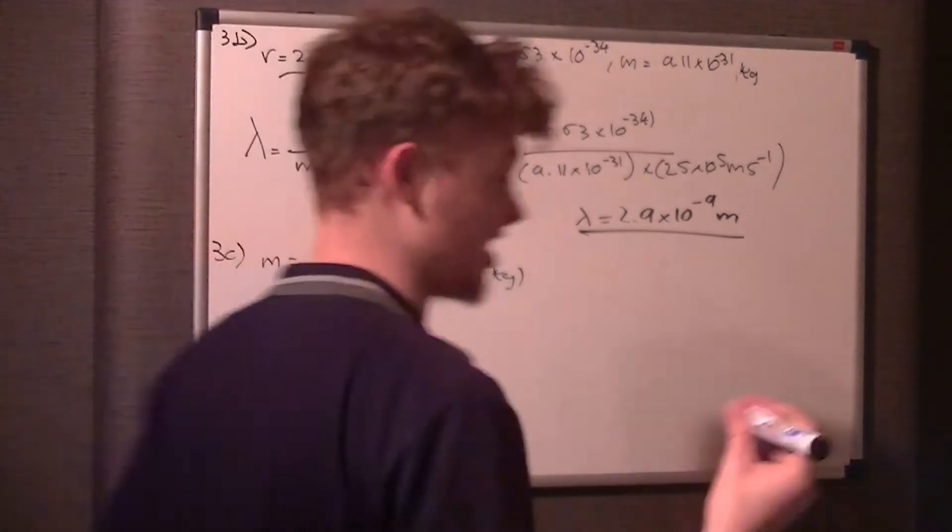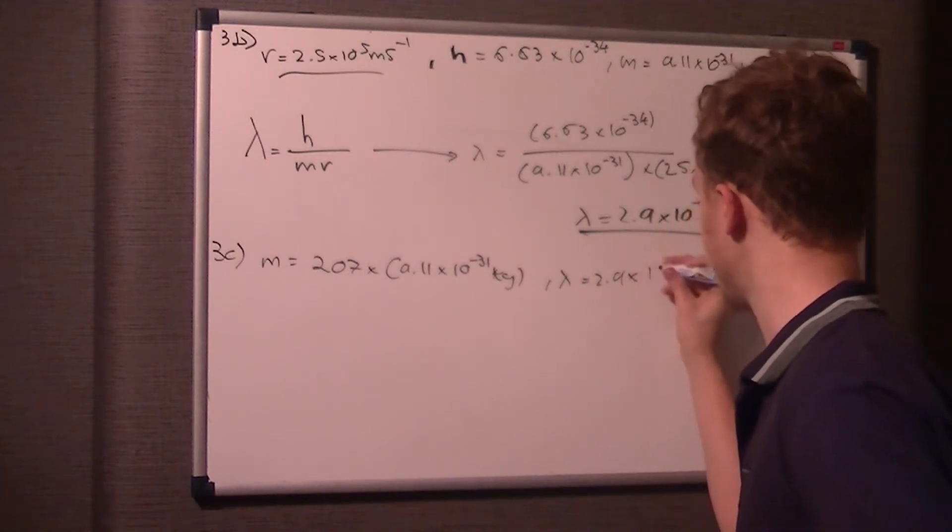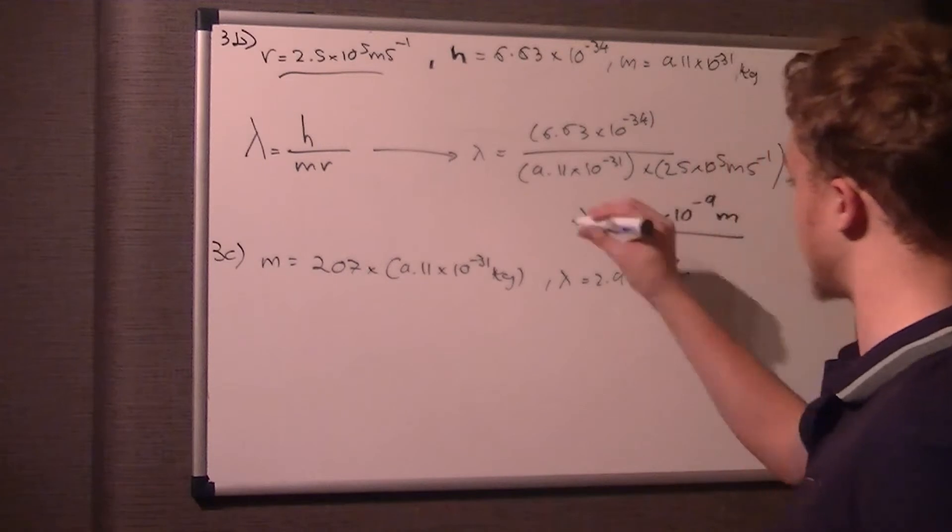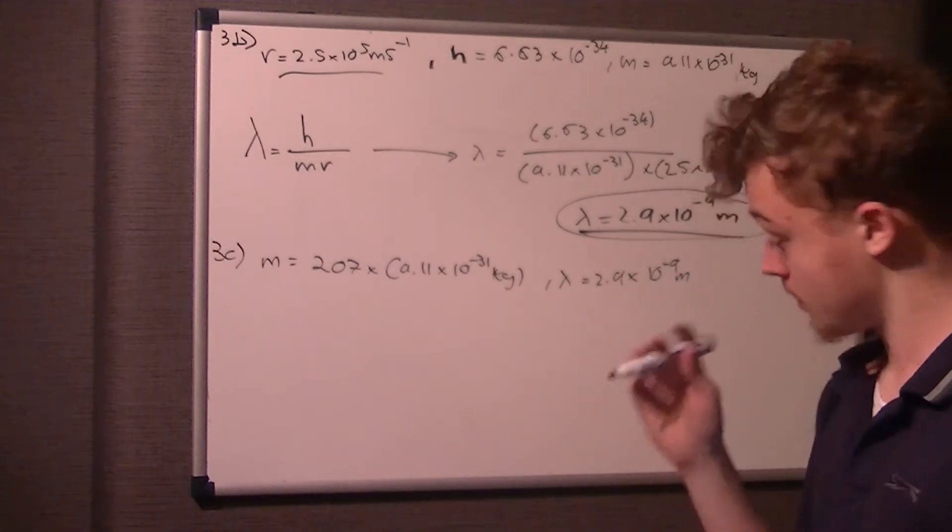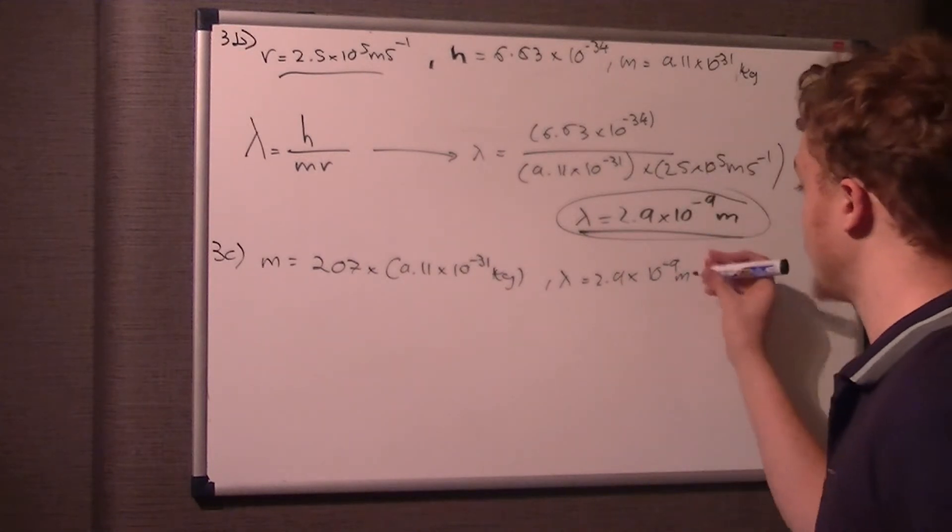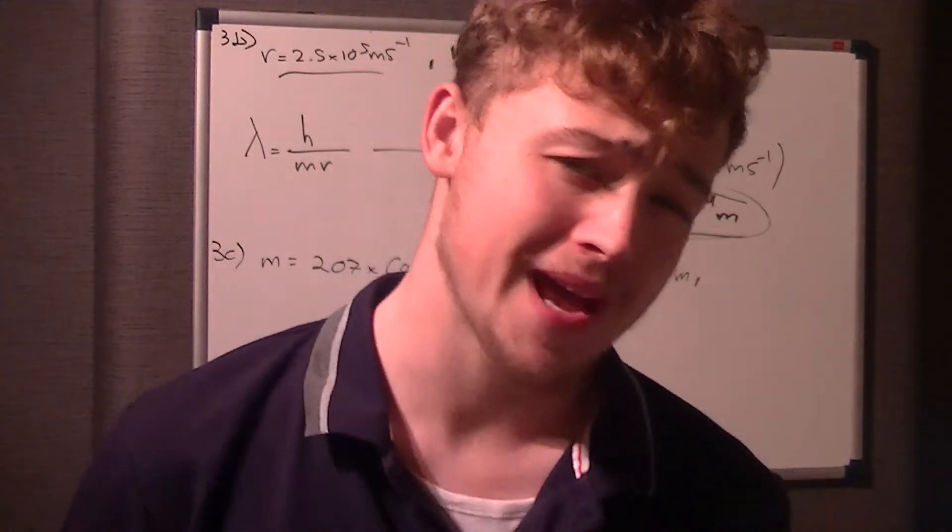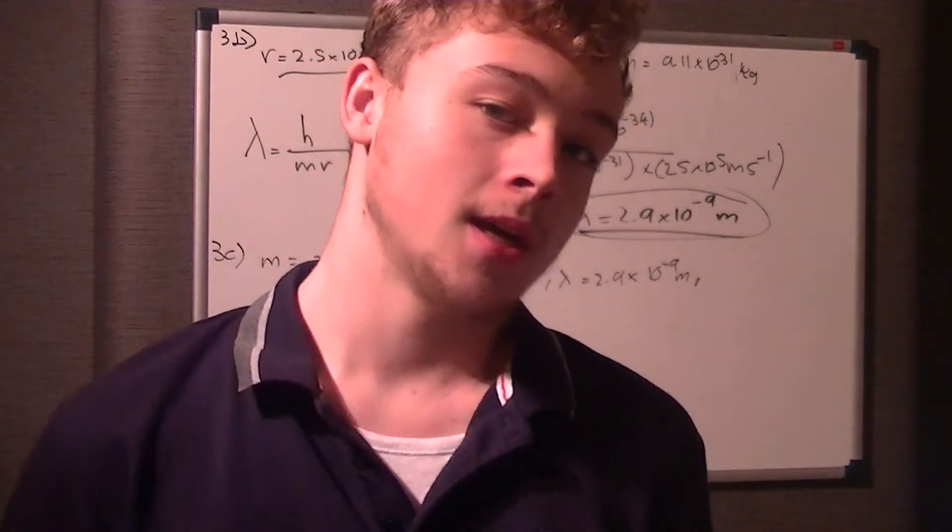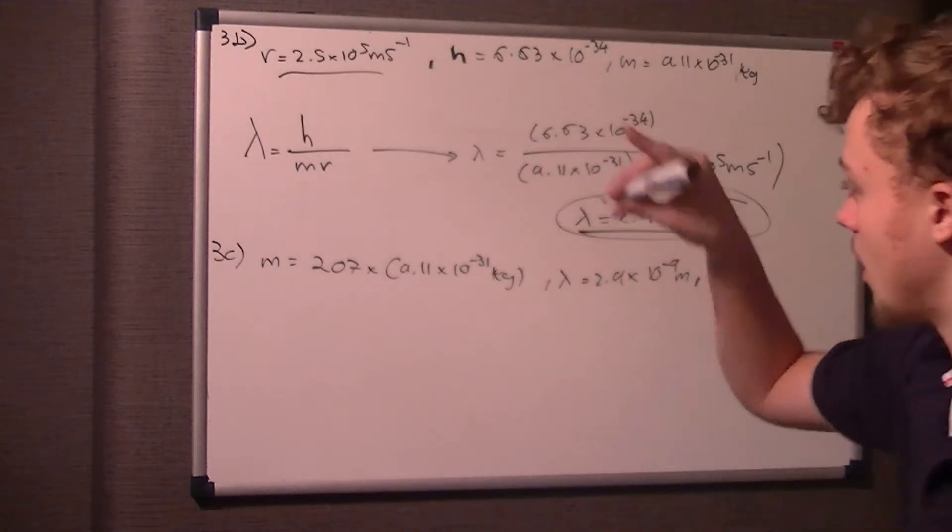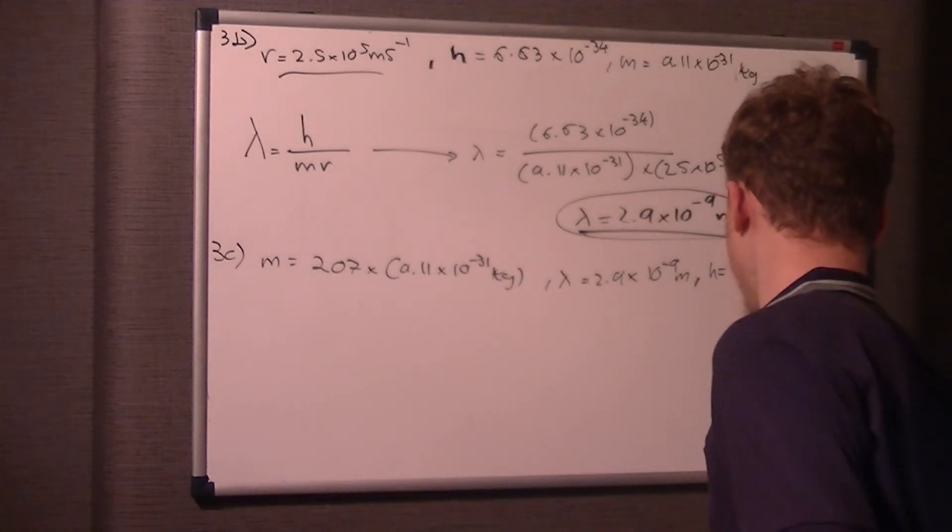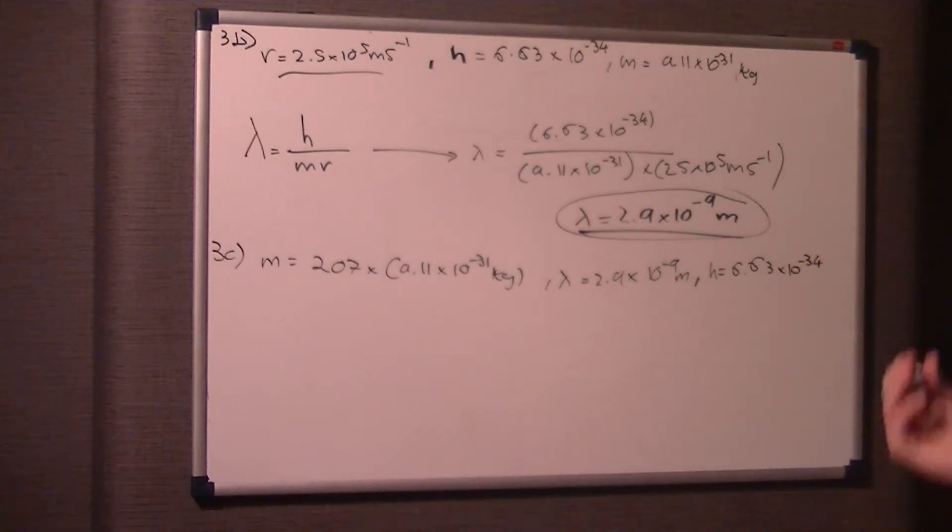I'll just leave that as the mass. We know lambda is going to be the same, which is 2.9 times 10 to the minus 9 meters. For accuracy I would leave the specific answer you get in your calculator. We know the mass, we know lambda, obviously we know h, which is 6.63 times 10 to the minus 34.